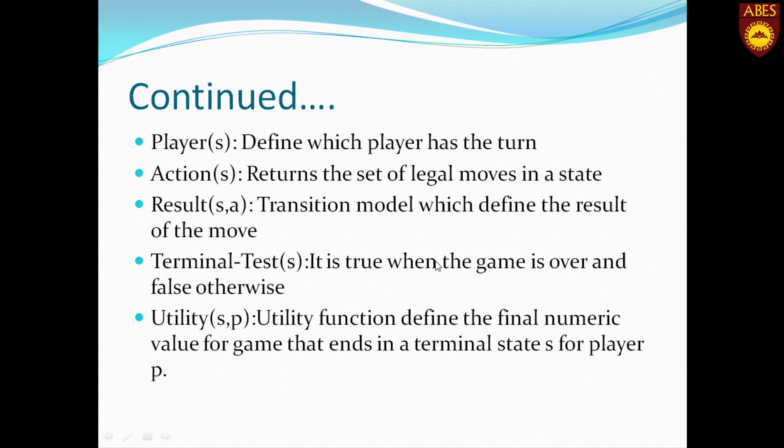We can define a game as a kind of search problem which has the following elements: S0, the initial state; player, which defines which player has the turn; action, which returns the set of legal moves in state S; result, which defines the result of action A in state S; terminal test, which returns true when the game is over and false otherwise; and utility function, which defines the final numeric value for a game that ends in a terminal state for a player P. This will be used when we discuss the min-max procedure and alpha-beta pruning.